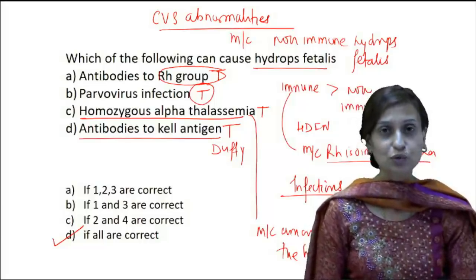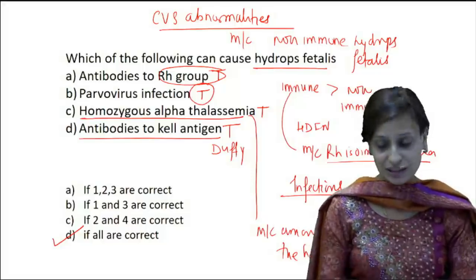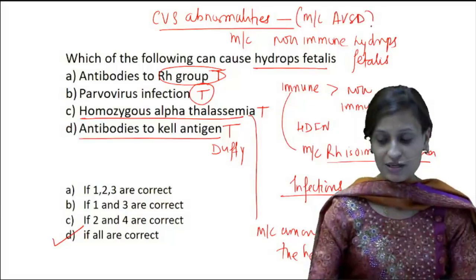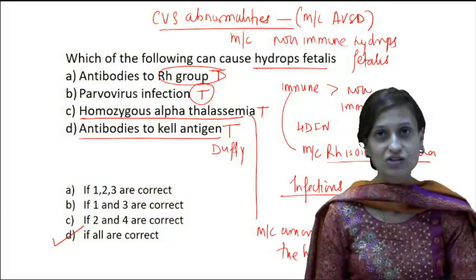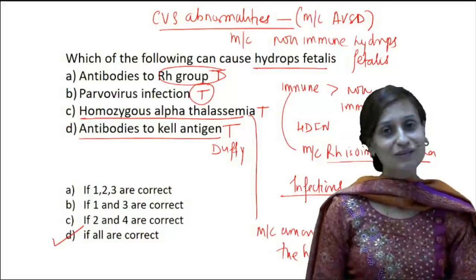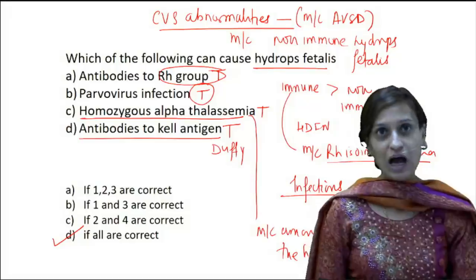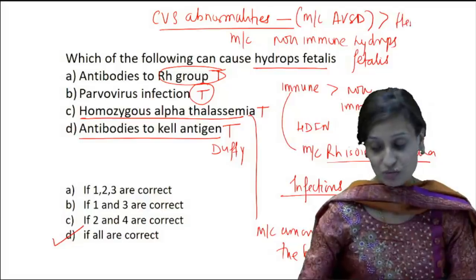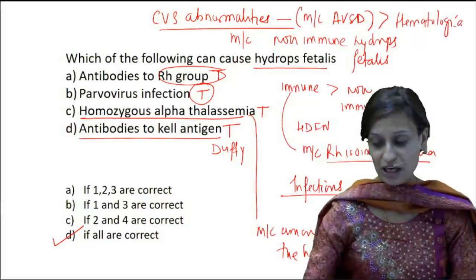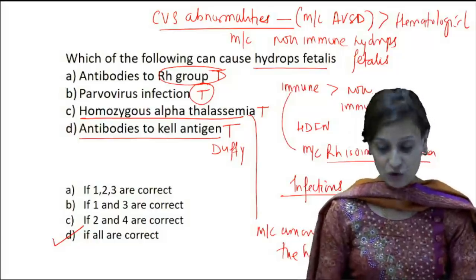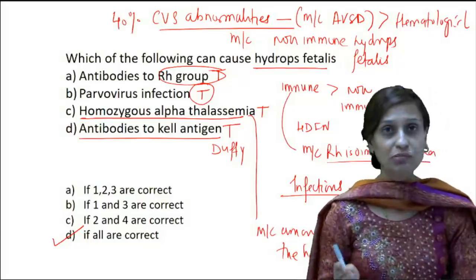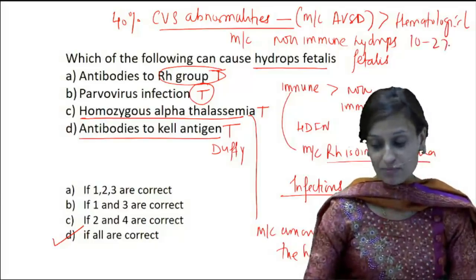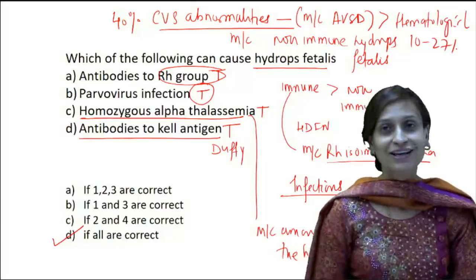Among cardiovascular abnormalities, the most common is atrioventricular septal defects. The next leading cause after cardiovascular is hematological causes, or fetal anemia. Approximately 40% of cases of non-immune hydrops fetalis are due to cardiovascular causes, whereas 10–20% are due to hematological causes.